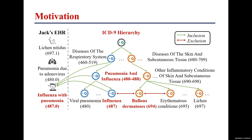This neglect can lead to an inaccurate representation of disease and ICD-9 code relations. For instance, as shown in this picture, if influenza with pneumonia is categorized under ICD-9 code 487, it demonstrates an inclusion relation and logically falls within the broader category of ICD-9 codes 480 to 488, indicating further inclusion. Conversely, it should not be associated with ICD-9 code 694, which requires exclusion.